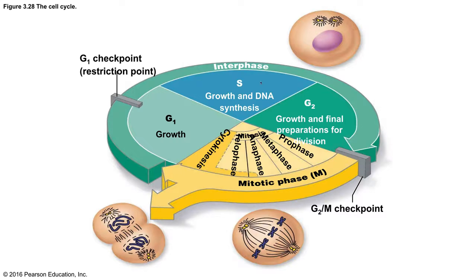In the cell cycle illustration, you can see the interphase and M phase with the G1 checkpoint and the G2 checkpoint. If the cell passes the G1 checkpoint, it enters the S phase and undergoes DNA synthesis. If there's an issue, the cell enters G0 or undergoes apoptosis. If everything proceeds through S and G2, there's a second checkpoint — the G2/M checkpoint — which looks for the MPF protein complex, the M-phase promoting factor. If this complex is present in substantial quantities, the cell can proceed to the mitotic phase.